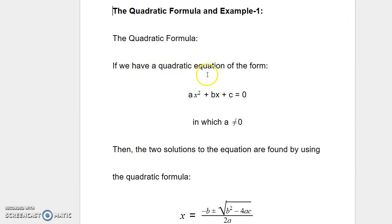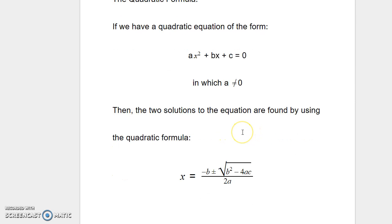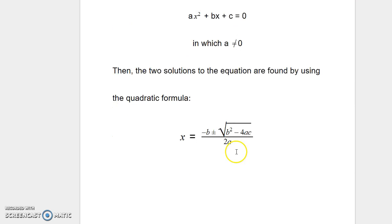If we have a quadratic equation of the form ax squared plus bx plus c is equal to 0, in which a is not equal to 0, then the two solutions to the equation are found by using the quadratic formula. The quadratic formula can be stated as: x equals negative b plus or minus the square root of b squared minus 4ac, the whole thing divided by 2a.